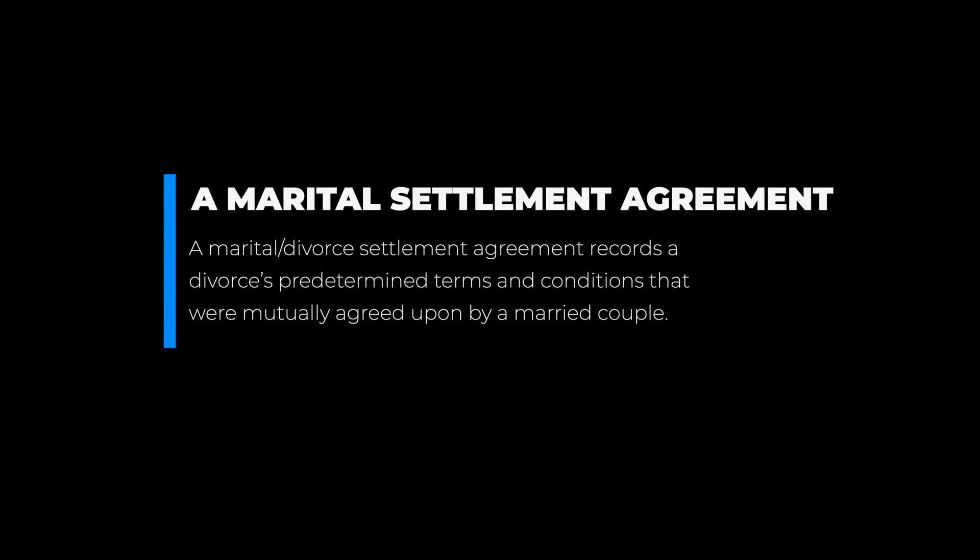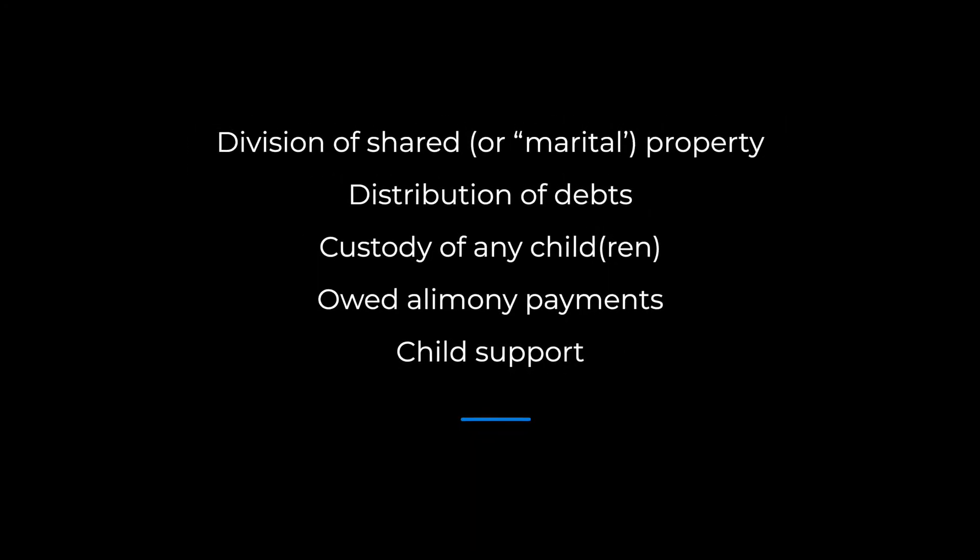First, let's discuss the question of what is a marital settlement agreement. A marital settlement agreement records a divorce's predetermined terms and conditions that were mutually agreed upon by a married couple. Some of the most common topics addressed on the settlement include division of real and personal property, distribution of debts, custody of any children, owed alimony payments, and child support. The spouses can complete this document and present it in court in order to set their own terms for divorce, as opposed to having a judge decide for them. On top of that, the divorce can be processed quicker since it may avoid extended trial proceedings or mediation.